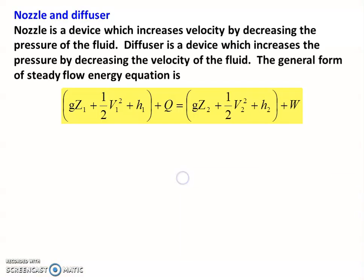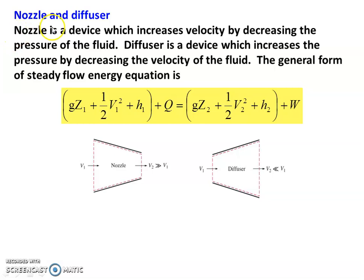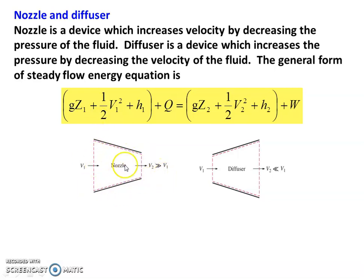First, we consider the nozzle and diffuser — two related devices. In a nozzle, the inlet velocity is V1 and the outlet velocity is V2. The inlet area is decreasing in the direction of flow — the area reduces progressively. In a diffuser, it is the opposite: the inlet velocity is V1 and the outlet velocity V2, where the area increases in the direction of flow.